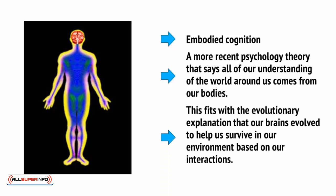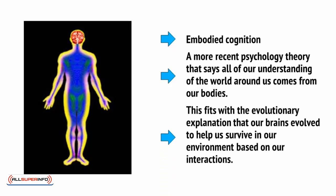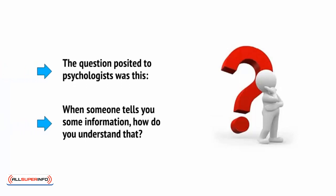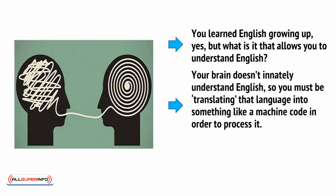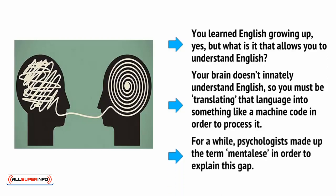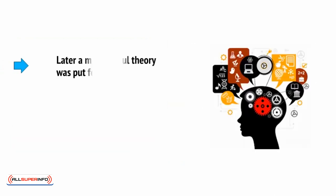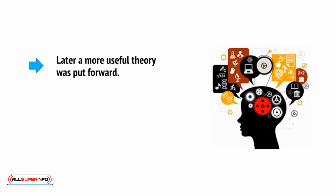This fits with the evolutionary explanation that our brains evolved to help us survive in our environment based on our interactions. The question posed by psychologists was this: when someone tells you some information, how do you understand that? You learned English growing up, but what is it that allows you to understand English? Your brain doesn't innately understand English, so you must be translating that language into something like a machine code in order to process it. For a while, psychologists made up the term 'mental ease' in order to explain this gap. But later, a more useful theory was put forward.